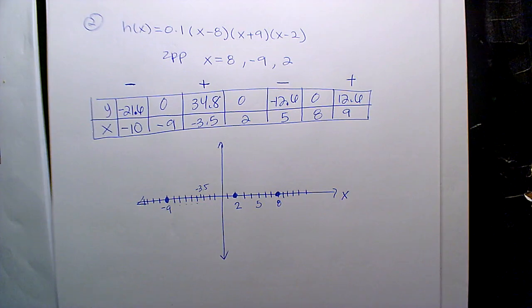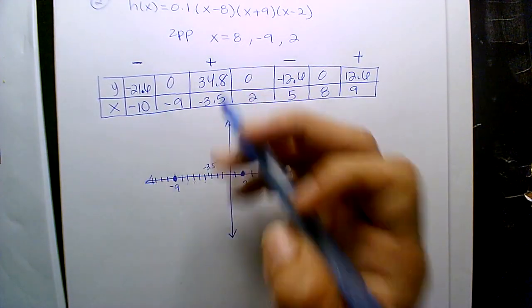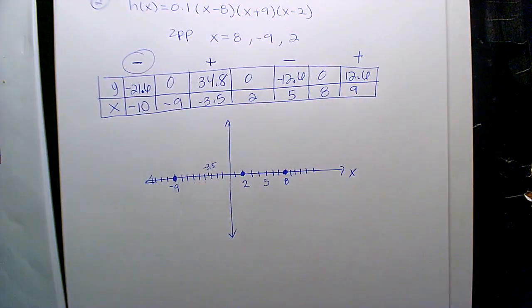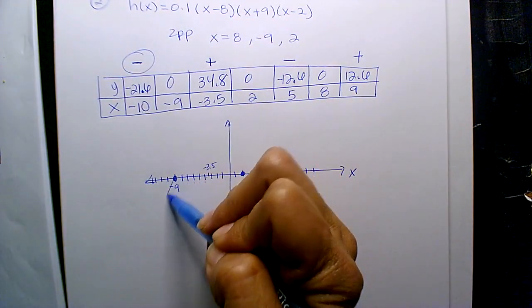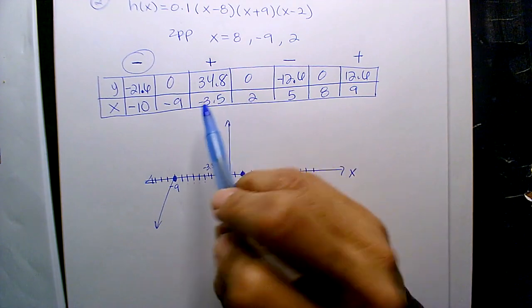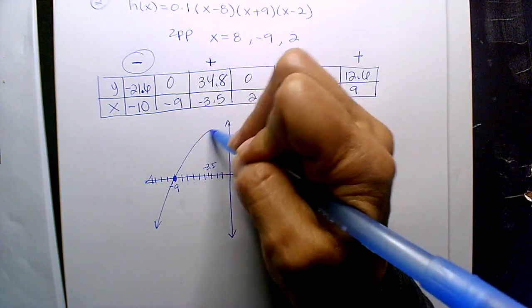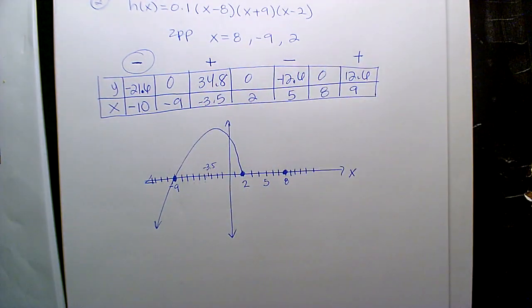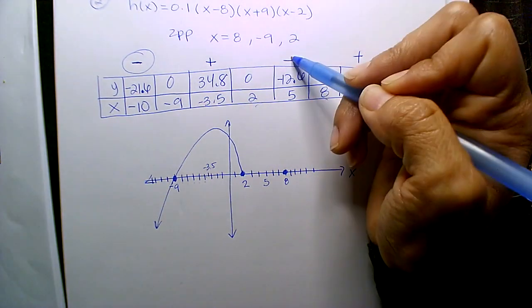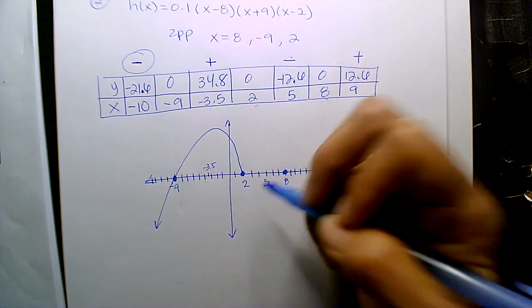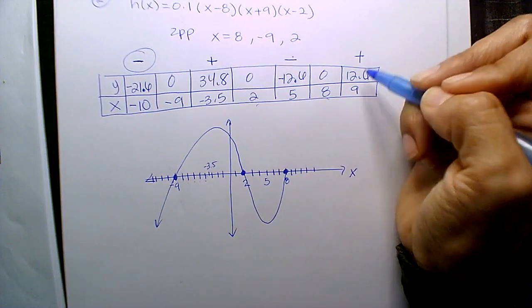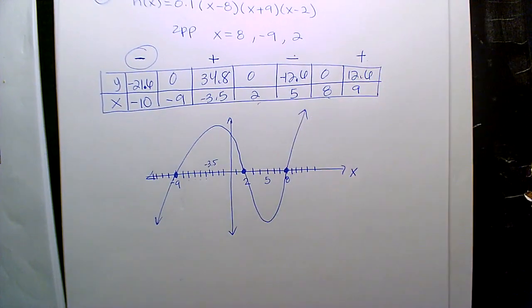I'm not going to graph it beautifully, but let me just make the point. Look, at negative 10, I'm in the negative Y values. That means I'm coming from below. Between negative 9 and 2, I'm in the positive region, so I know I'm going up and coming back down. Between 2 and 8, I'm in the negative Y values, so I'm dropping and coming back up, and then I end positively.